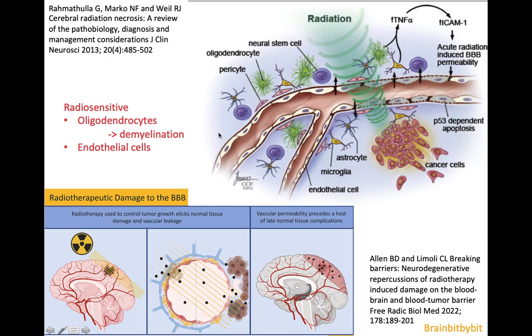The white matter is more radiosensitive than the gray matter, and especially the oligodendrocytes are very radiosensitive. Damage to the oligodendrocytes by radiation leads to demyelination. Endothelial cells are also very vulnerable to radiotherapy, and this leads to increased vascular permeability and to the microangiopathy that you can see after radiotherapy. We're going to talk in more detail about the different microangiopathies in the next vlog.